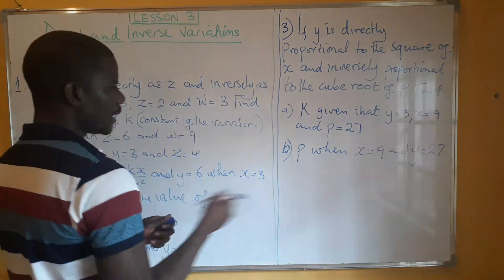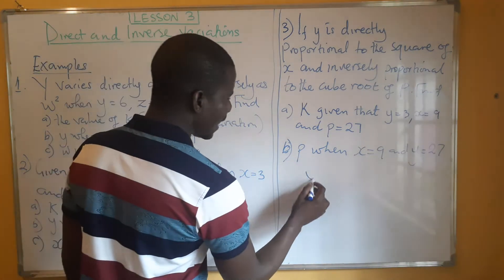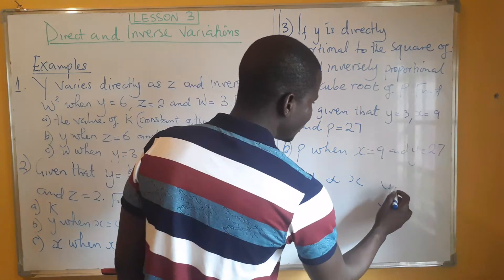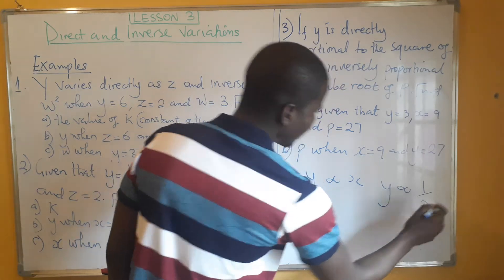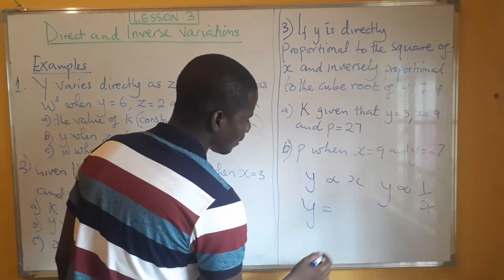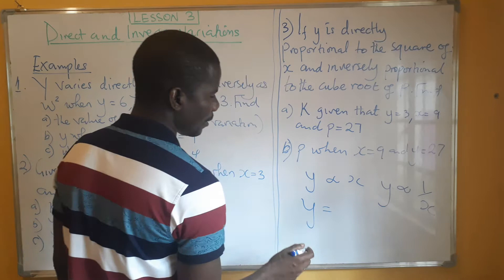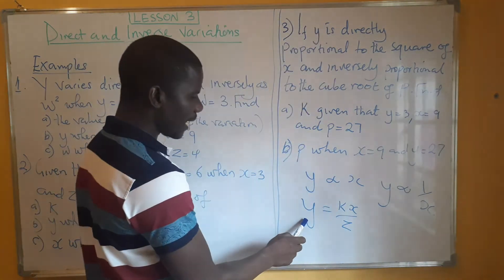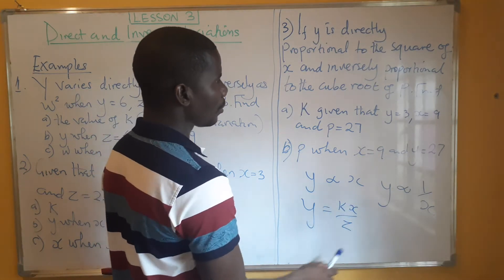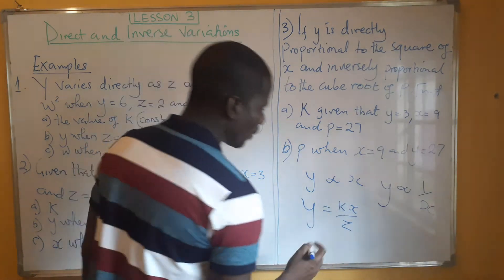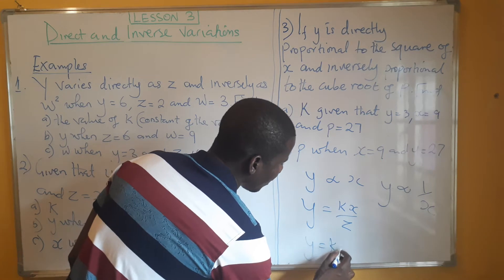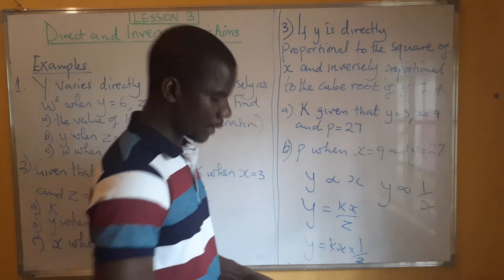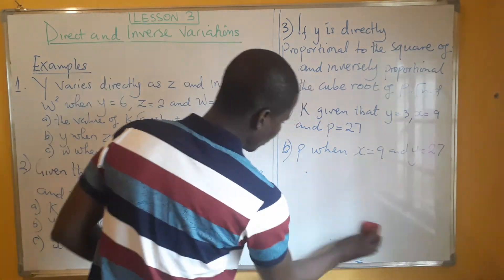You know that for direct variation, if Y varies directly with X, we write it like this. For inverse variation, if Y varies inversely with X, we write it as 1 over X. So if we have something written in terms of K, it appears that Y varies directly with Z and also inversely — because it's like Y equals K times X multiplied by the inverse of Z, which is 1 over Z. That is where these things are coming from. So when we are looking at a combination of the two, this is what we're going to be talking about.